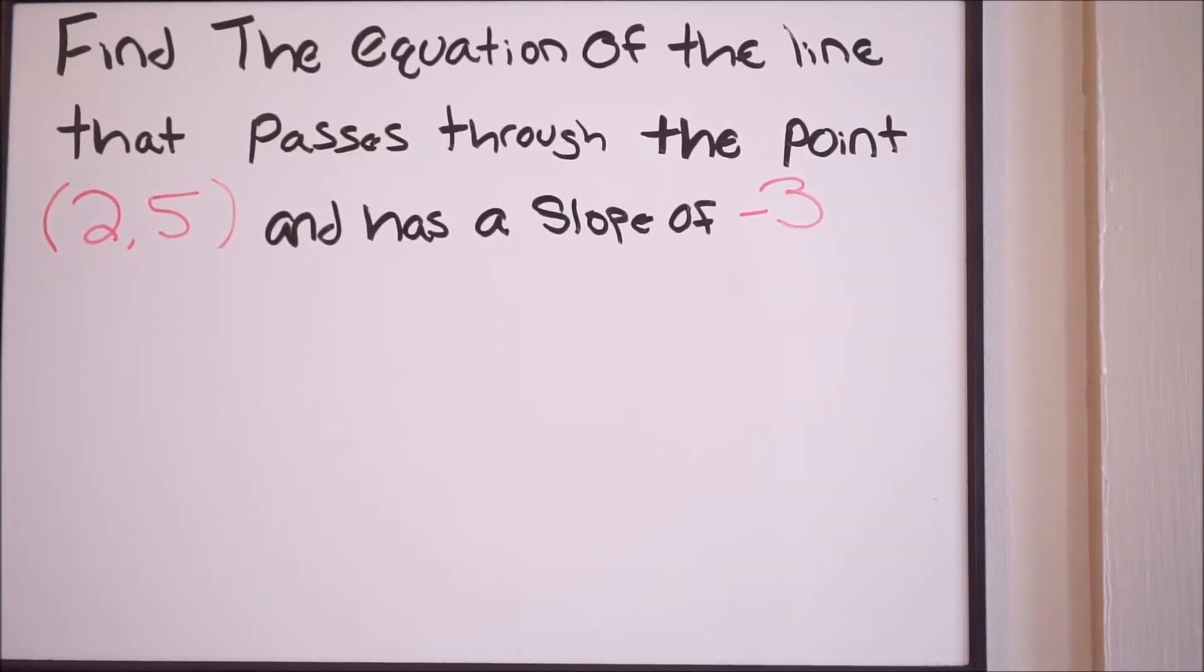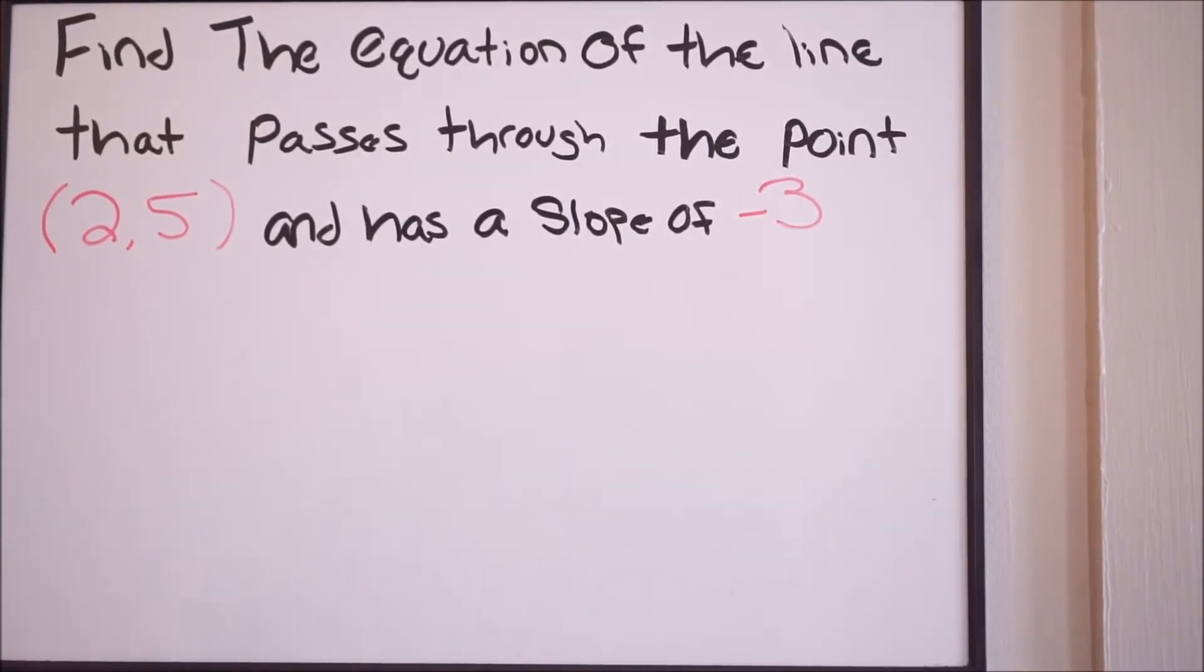Okay guys, in this particular problem we're being asked to find the equation of the line that passes through the point (2,5) and has a slope of negative 3.